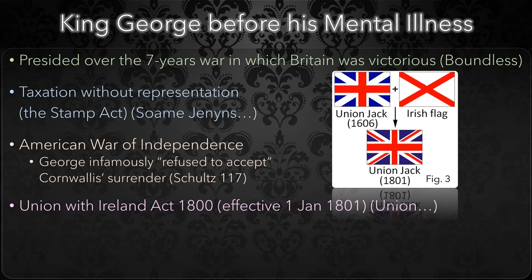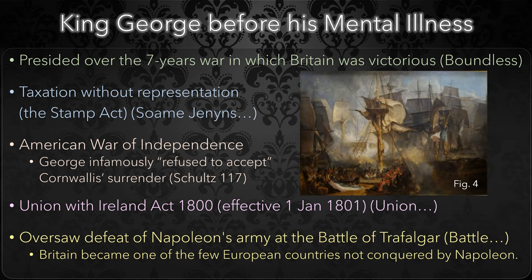King George also had to deal with the French Revolution and subsequent Napoleonic Wars. After over a decade of on and off war with France, Britain's navy, although outnumbered and outgunned, decisively defeated the combined French and Spanish fleet at the Battle of Trafalgar in 1805, finally ending any threat of mainland invasion, although Britain continued to fight against France until 1811. King George was regent during the duration of the Napoleonic Wars.